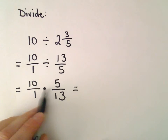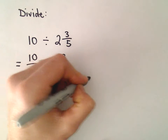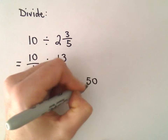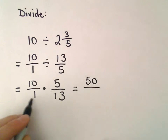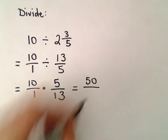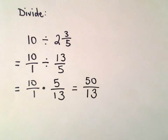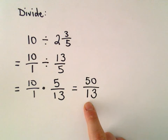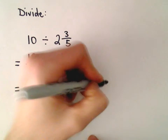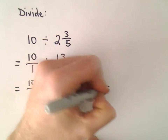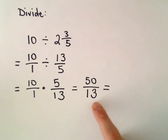So 10 times 5 will be 50, and 1 times 13 is just 13. We could leave it as the fraction 50 over 13, or we could write it as a mixed number.